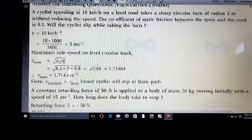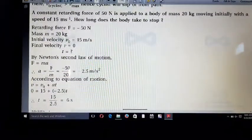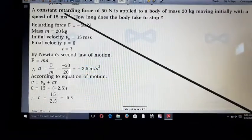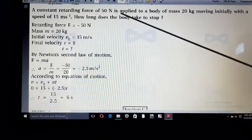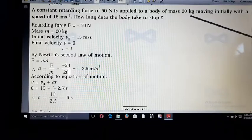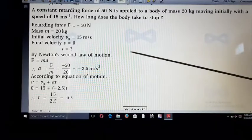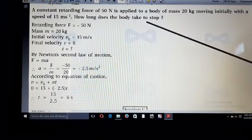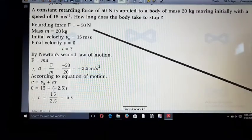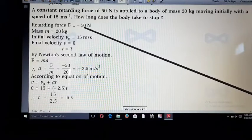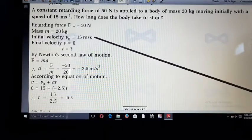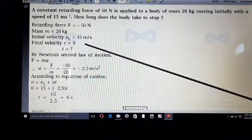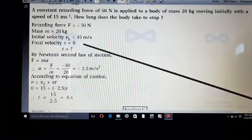Next, 5.5. A constant retarding force of 50 N is applied to a body of mass 20 kg moving initially with a speed of 15 meter per second. How long does the body take to stop? Friends, look here. Retarding force means we write down minus 50. Mass is 20. Initial velocity is 15 meter per second. And final velocity is 0 because body takes to stop.